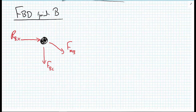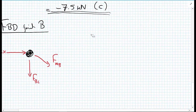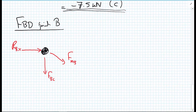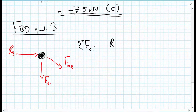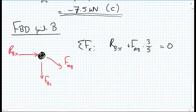Setting up the equations of equilibrium for joint B: for the sum of forces in the X direction, RBX + FAB × (3/5) = 0. Substituting the known FAB gives RBX = −7.5 kilonewtons.